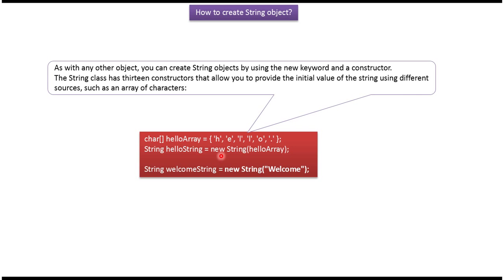Here I have created a string object using the new keyword and a constructor. The String class has 13 constructors, and using those we can create a string object.